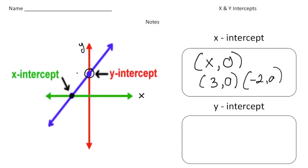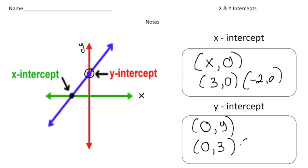That would be the y-intercept. It's actually the opposite of the x-intercept — for the y-intercept, the x-value is zero. So we're going to have a zero for the x-value, and then we're going to have the y-value. An example of that could be zero and three, or maybe zero and five. The big thing is: the x-intercept has a y-value of zero, and the y-intercept has an x-value of zero.